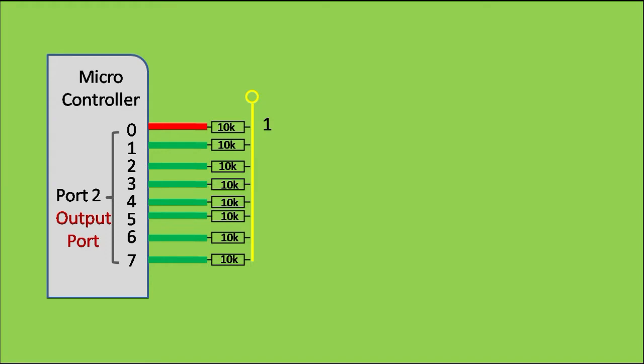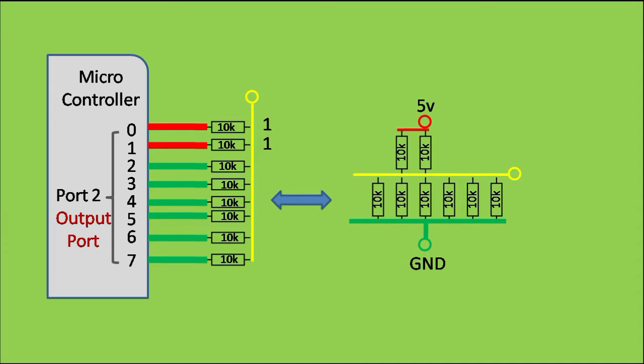Next, writing 1 to the next pin of the microcontroller will connect one more resistor to 5V and remove one resistor from ground, whose equivalent circuit will look like this, giving an equivalent resistance of 5 kohm on top of the center point and 1.67 kohm at the bottom which will give a voltage of 1.25V.